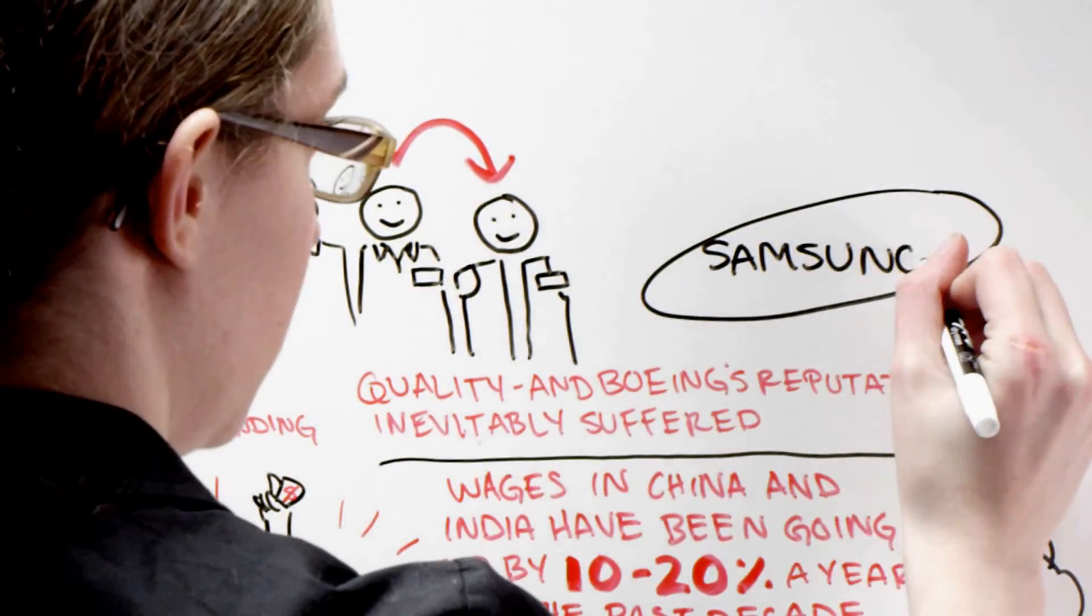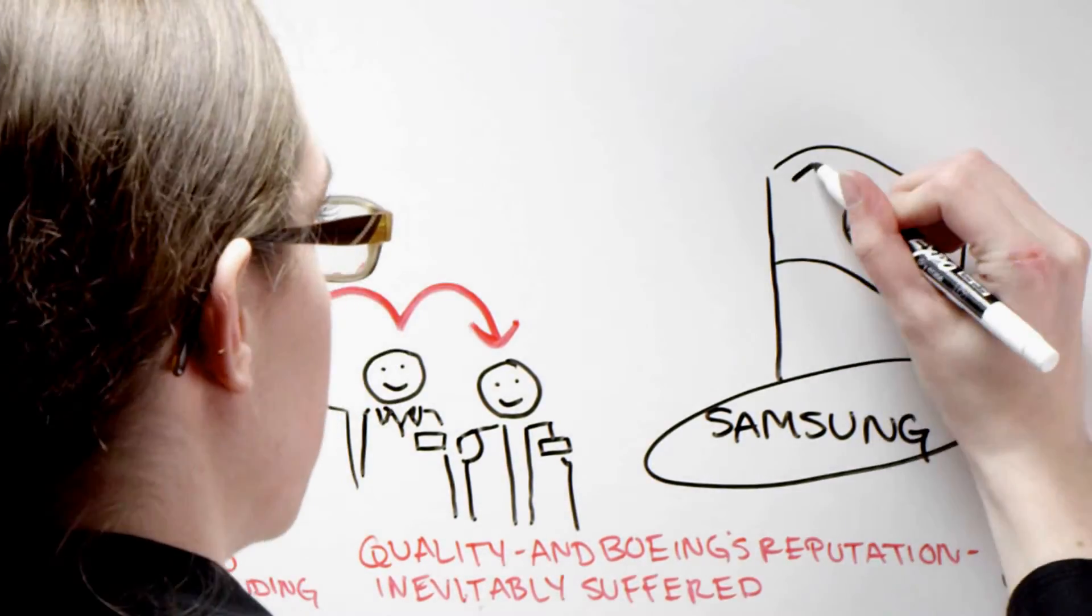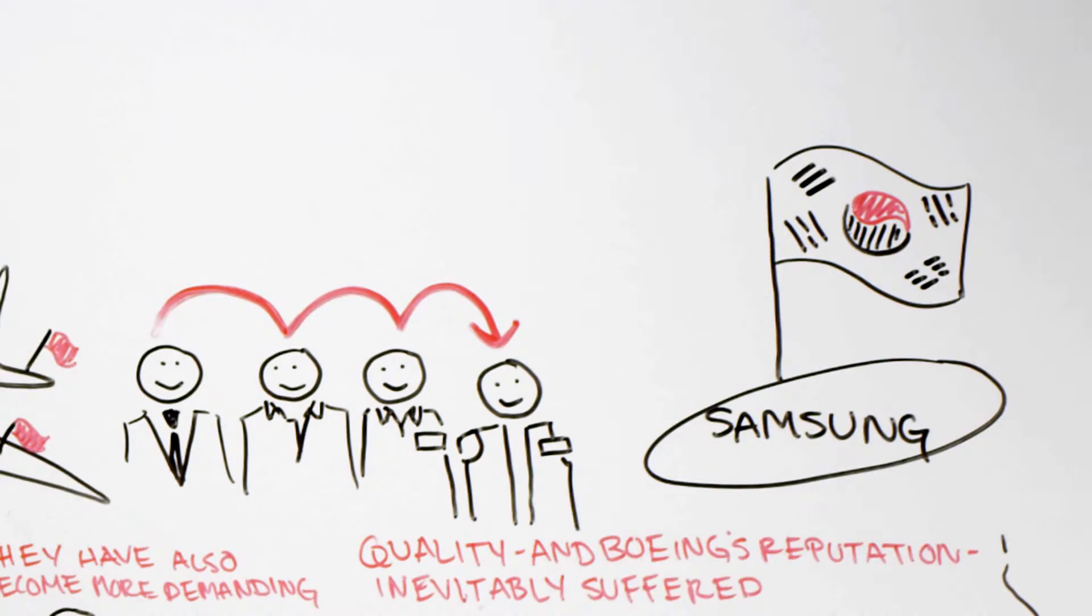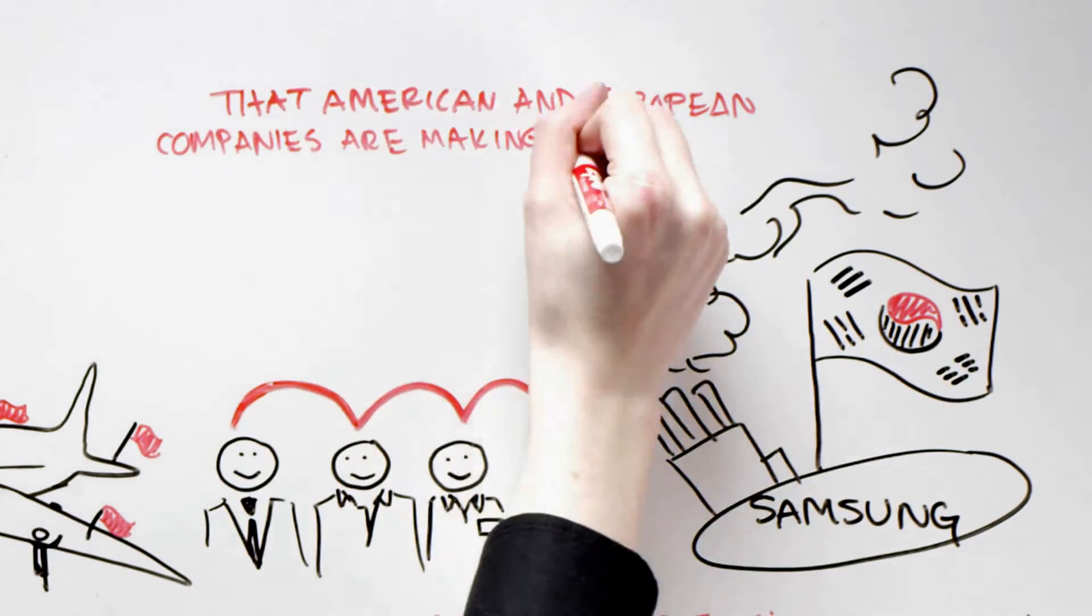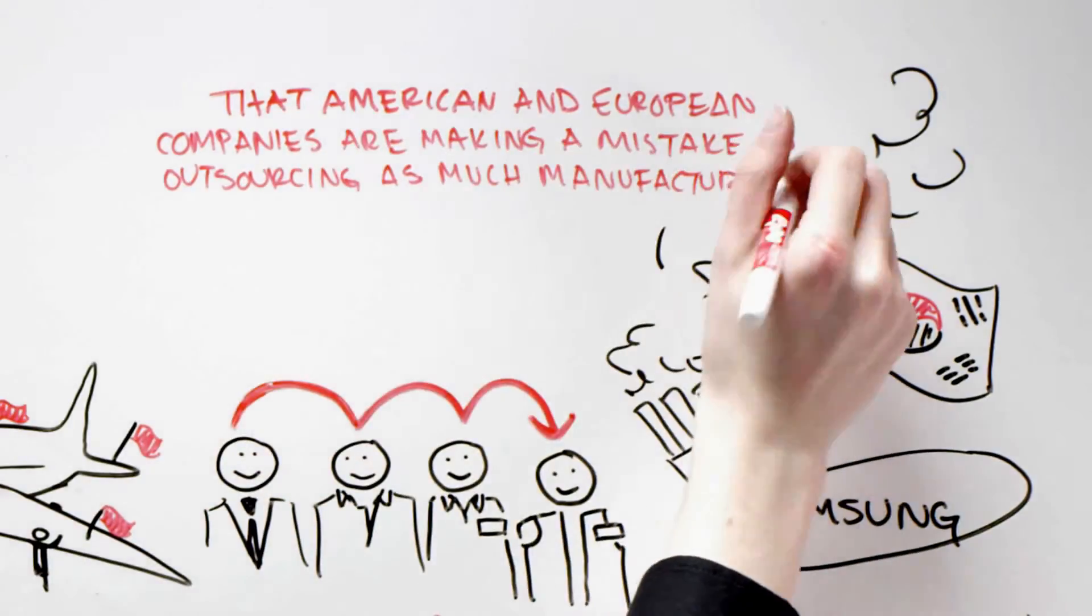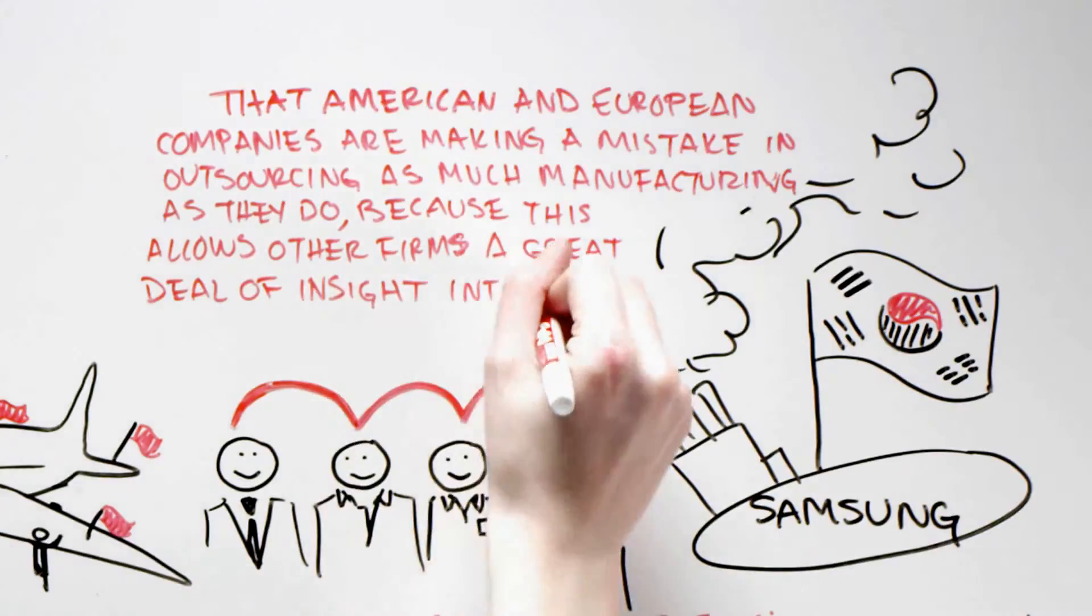Finally, there's the story of Samsung. For US companies, the rise of the South Korean electronics giant should be a cautionary tale. According to The Economist, South Korean business leaders rarely outsource production and believe that American and European companies are making a mistake in outsourcing as much manufacturing as they do, because this allows other firms a great deal of insight into their processes.